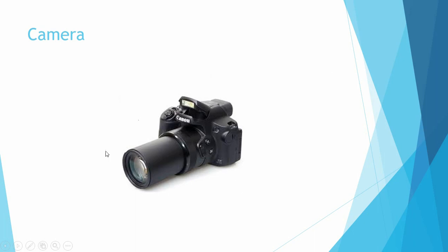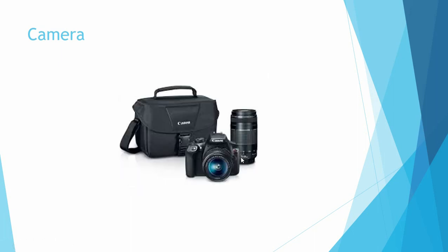Now, as you can see here, we have a bridge camera — in this case a Canon PowerShot SX-70HS. The difference between this camera and the DSLR is that this camera has just one lens and doesn't have the ability to change lenses. But as you can see, it has a great zoom and all the features that the DSLR camera has. The great news is that these kinds of cameras are less expensive than DSLR cameras.